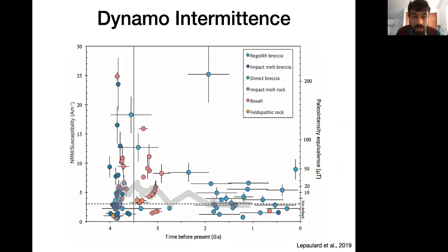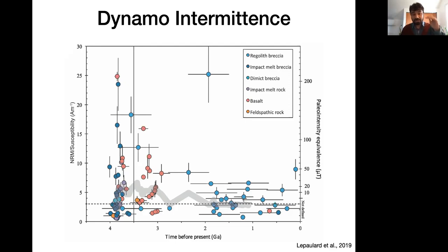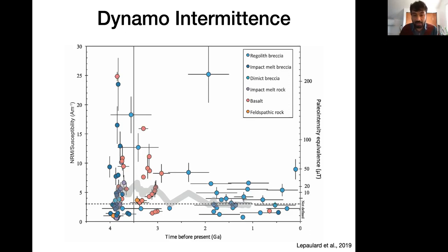There is a study by Le Paulard et al. in 2019, where they took the NRM-to-susceptibility ratio of 161 samples from the Apollo archives to approximate paleointensity. They found a distinctly higher average field intensity in the high-field epoch of the first billion years, followed by two billion years of lower average intensity. Importantly, among these samples they found regimes of high field intensities amidst samples displaying low field intensities, supporting the idea that we need to sample more rocks to find recordings of low field strength.